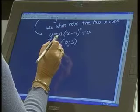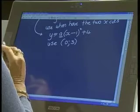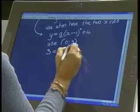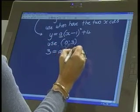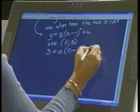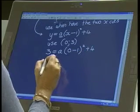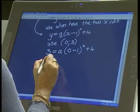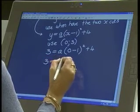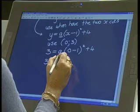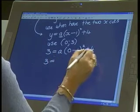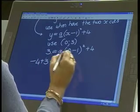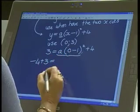Substituting (0,3) into the equation gives 3 = a(0 - 1)² + 4. The student works through simplifying the right side.